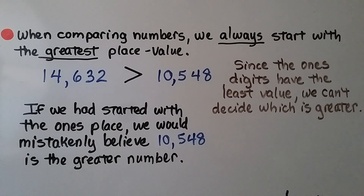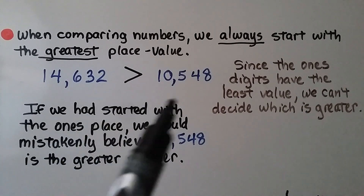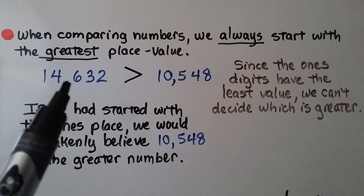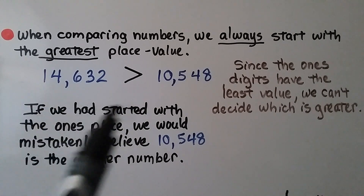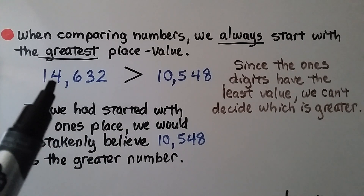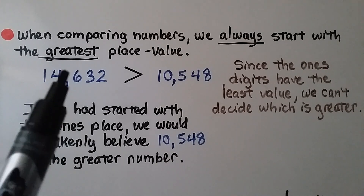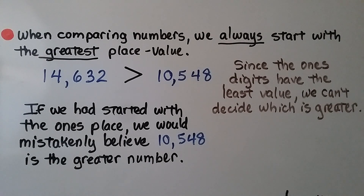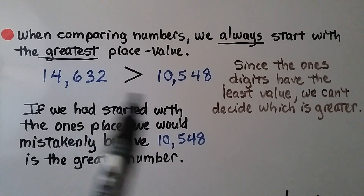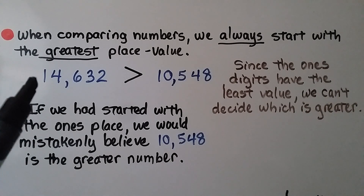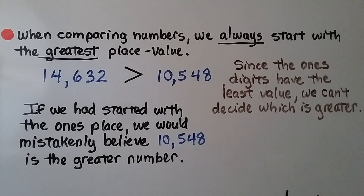When comparing numbers, we always start with the greatest place value — since the ones digits have the least value, we can't decide which is greater from there alone. Here we have 14,632 and 10,548. They both have a 1 in the ten thousands place, but 14,632 has a 4 in the thousands place while 10,548 has a 0, so 14,632 is greater. If we had started with the ones place, we would have mistakenly thought 10,548 was greater because of its 8. So we always start with the greatest place value and work our way back.